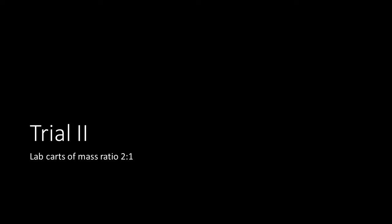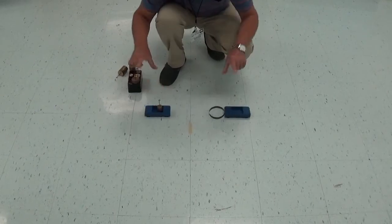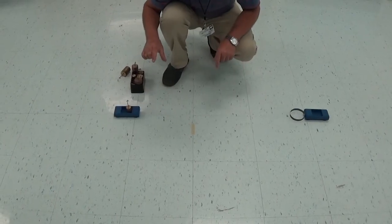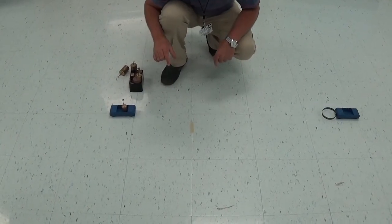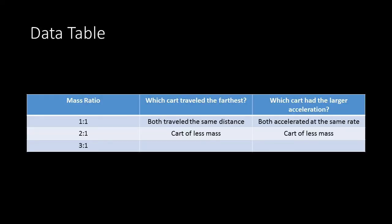Trial two: the lab carts have a mass ratio of 2 to 1, so 1000 grams to 500 grams. What ended up happening was the cart of less mass ended up traveling the farthest, and the cart of less mass also had the larger acceleration.